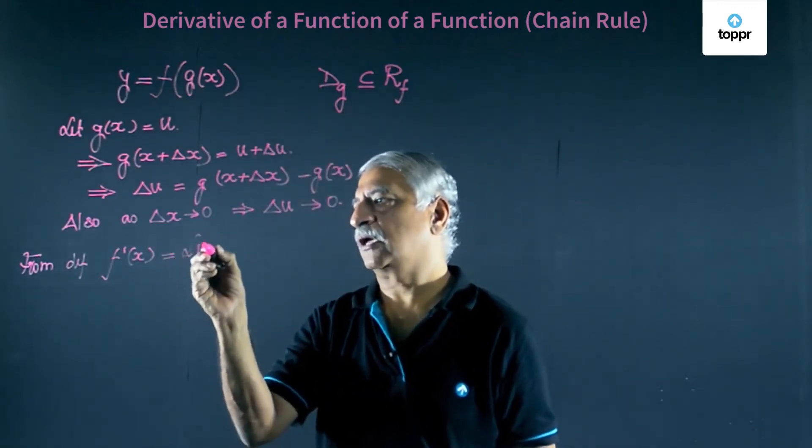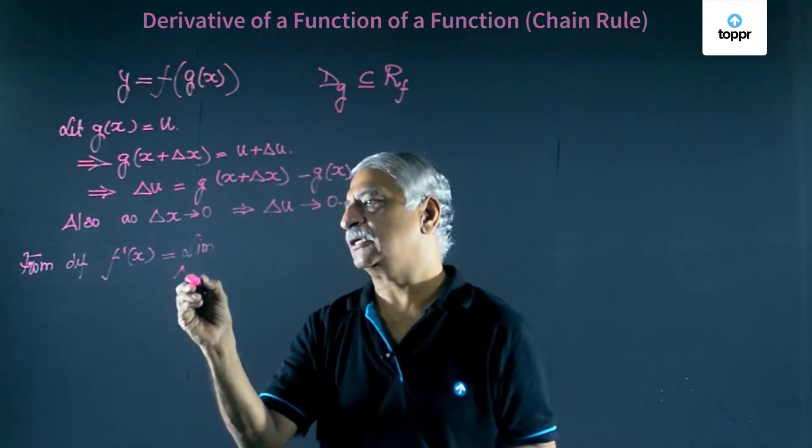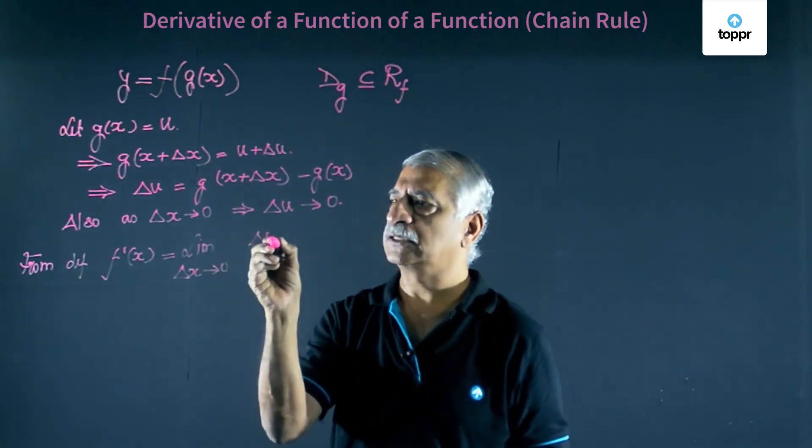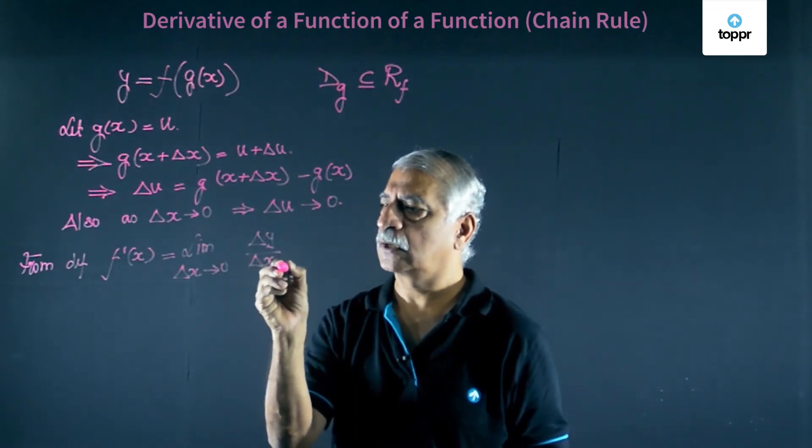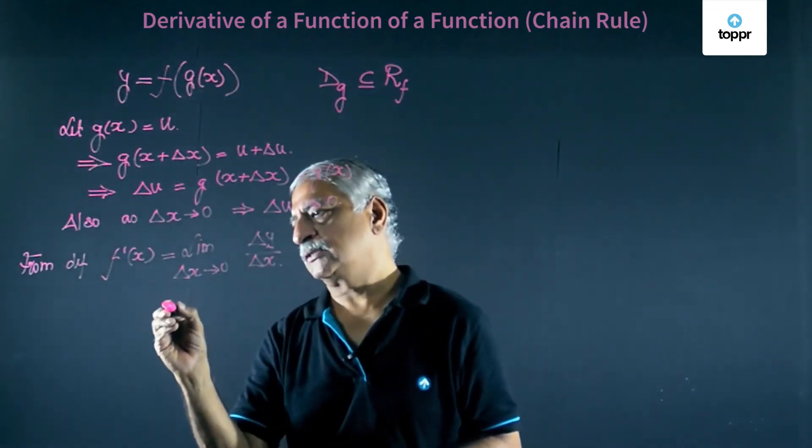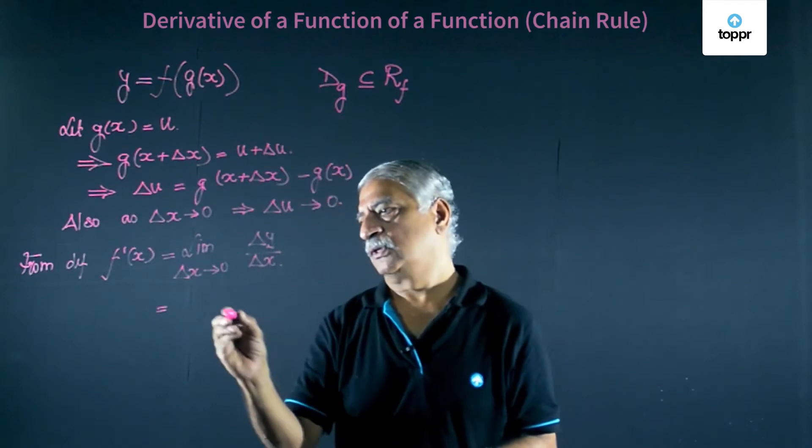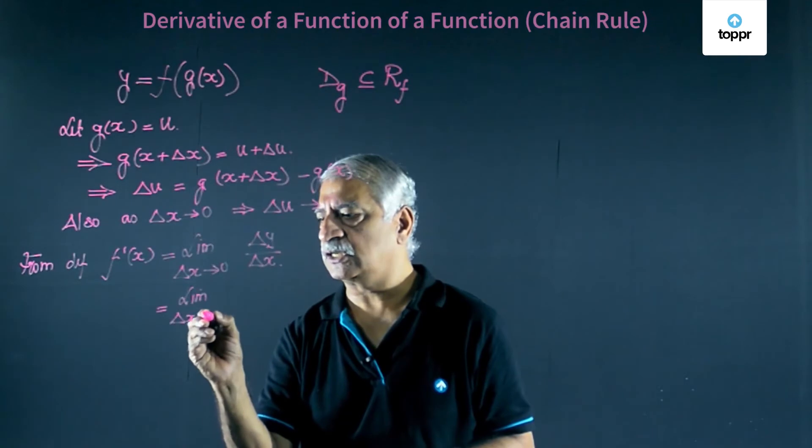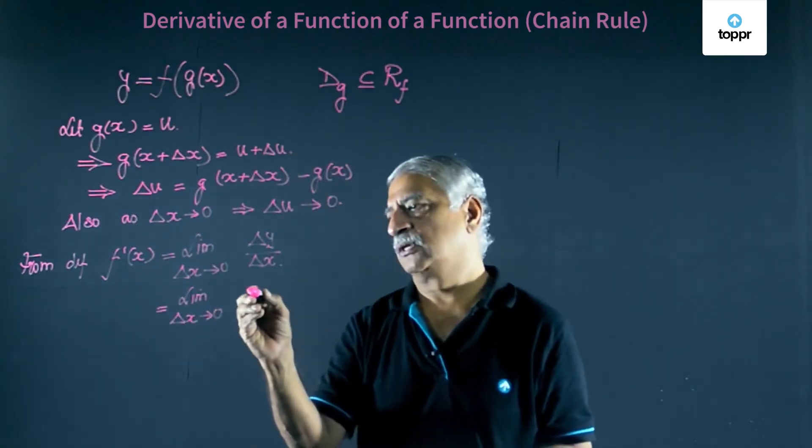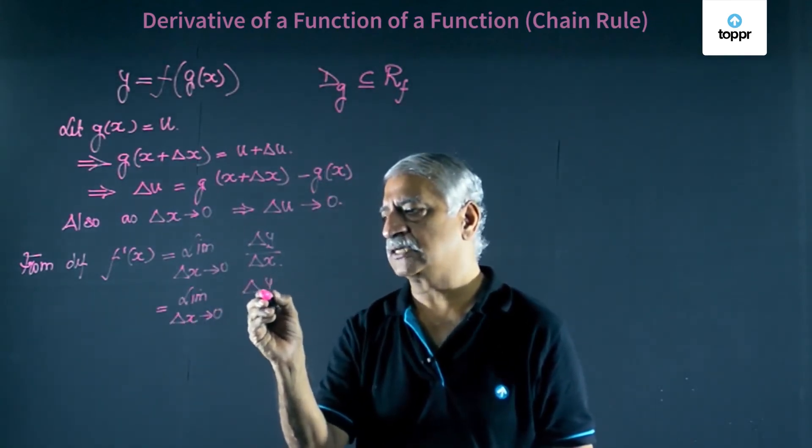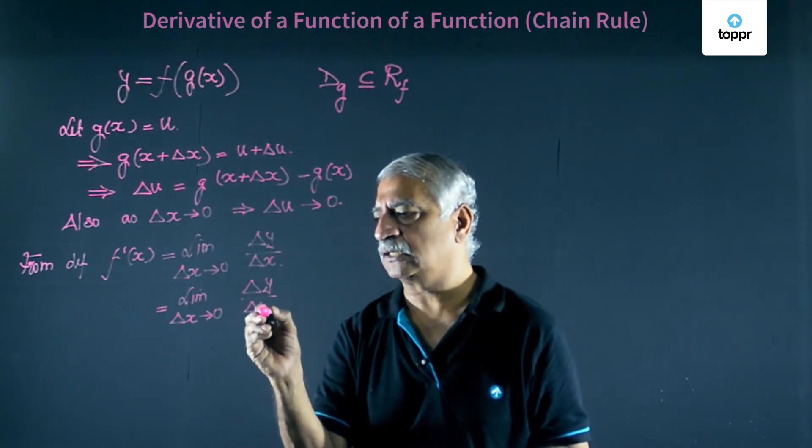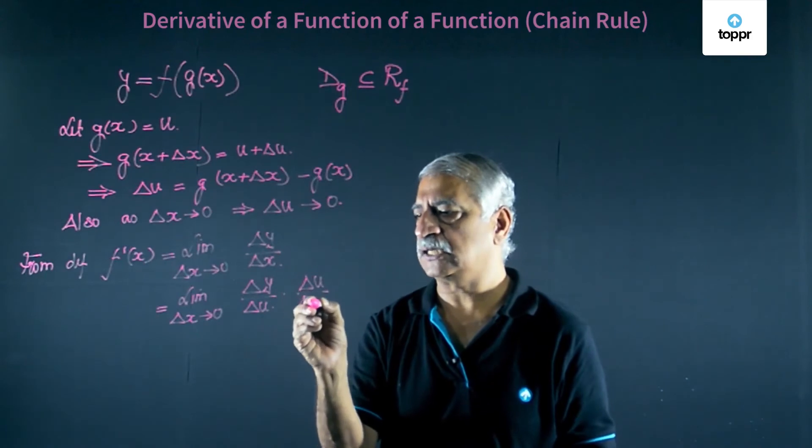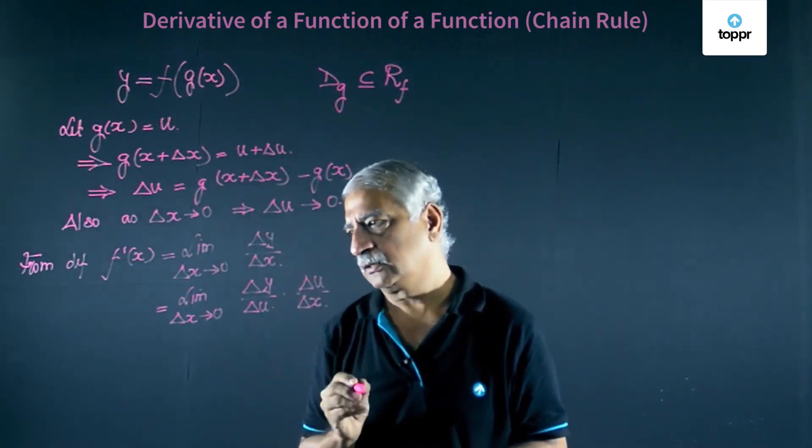limit as delta x tends to 0 of delta y by delta x. This is equal to limit, I make some changes, delta x tending to 0. I write this as delta y by delta u into delta u by delta x. I multiply and divide by delta u.